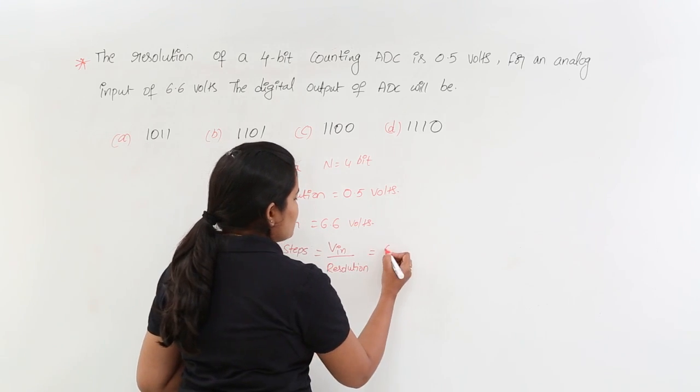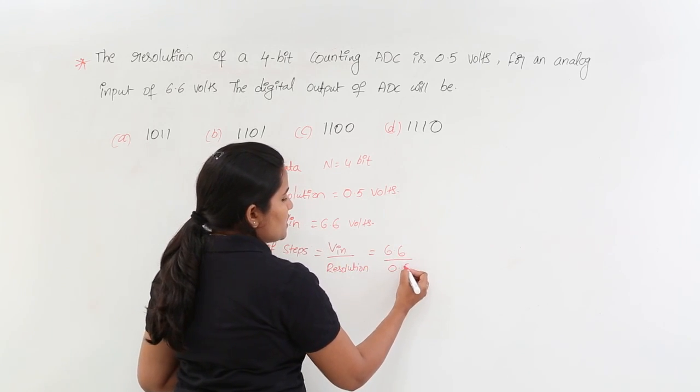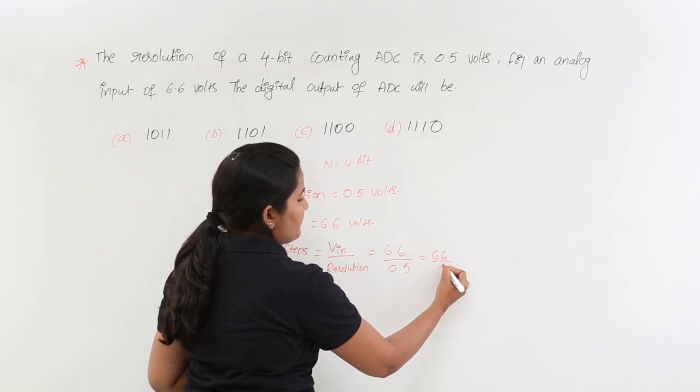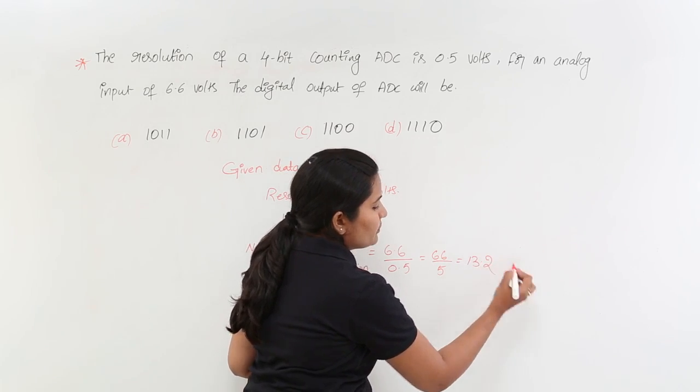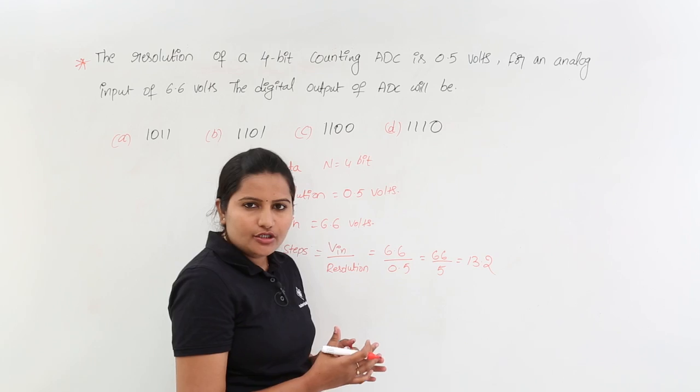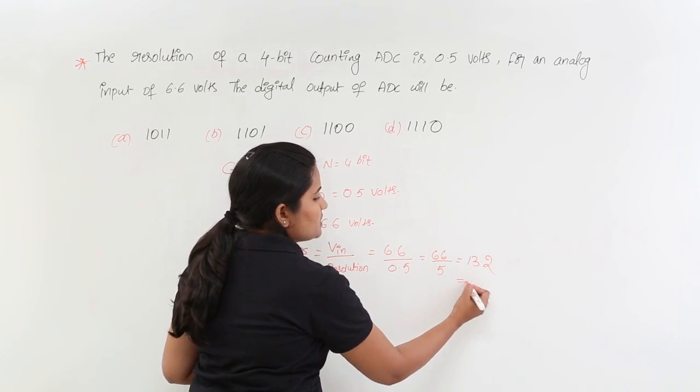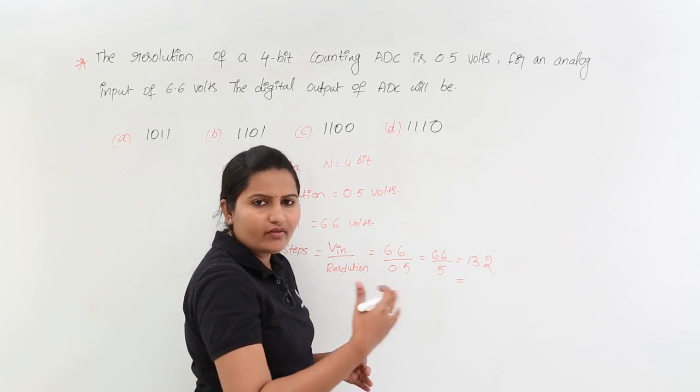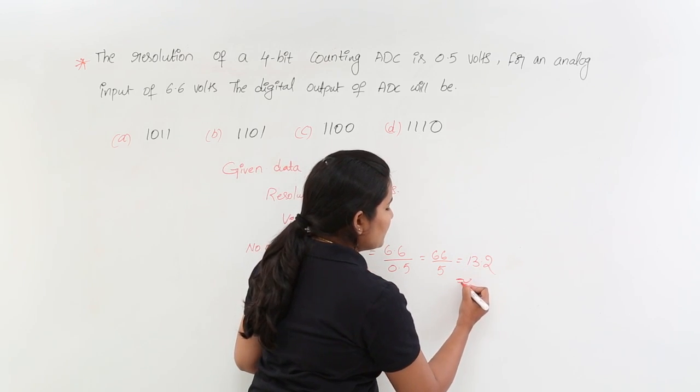Vin is equivalent to 6.6 volts divided by 0.5 volts. Here 6.6 by 0.5 I am writing like 66 by 5, this is nearly 13.2. But 13.2 we cannot represent in digital. So here I am just truncating that .2 because from 13.5 onwards you can take 14, but 13.2 I am just taking like 13.